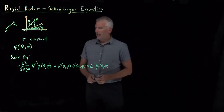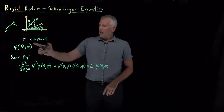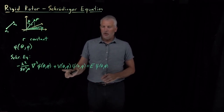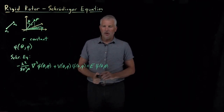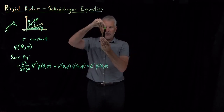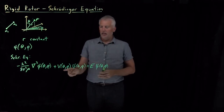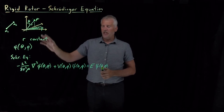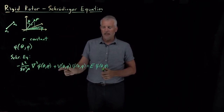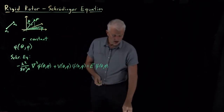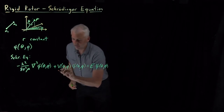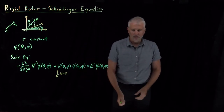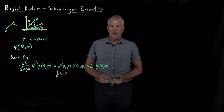For this particular case, the potential energy term asks how different the potential energy is for different orientations of the diatomic molecule. For a gas molecule changing its orientation, we don't expect the potential energy to differ for any orientation. So we assume the potential energy equals zero for this rigid rotor model.